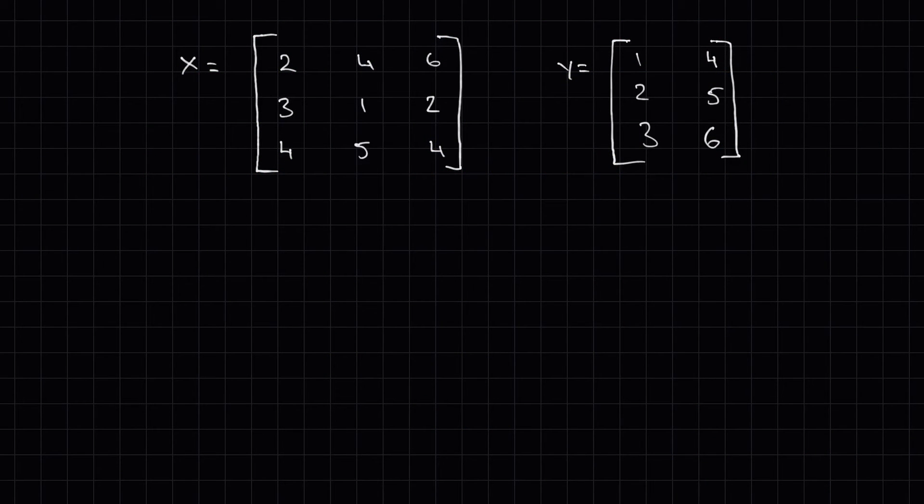Let's look at another example now. We have matrix X and Y. We want to multiply X times Y. First, we need to check the orders and see if we can actually multiply these two matrices. When we look at the number of columns in matrix X and the number of rows in matrix Y, we can actually say that X times Y is possible because those two numbers are the same.